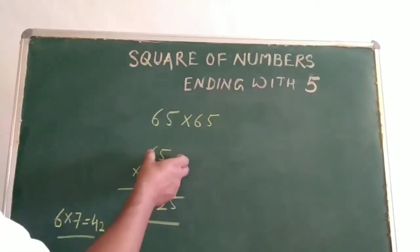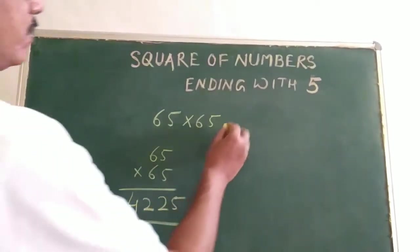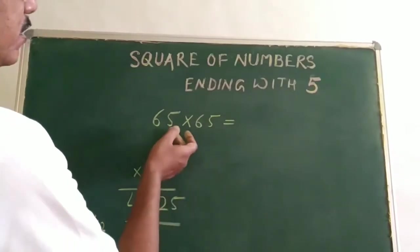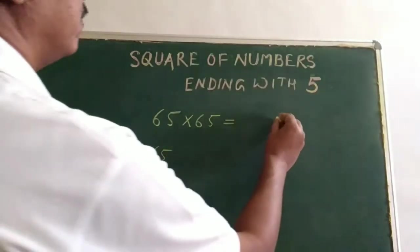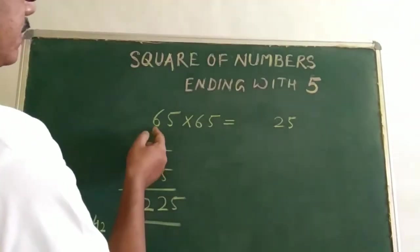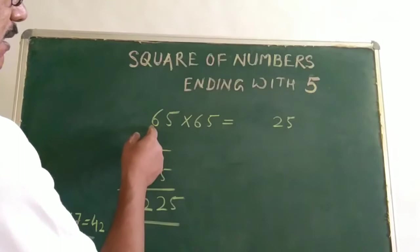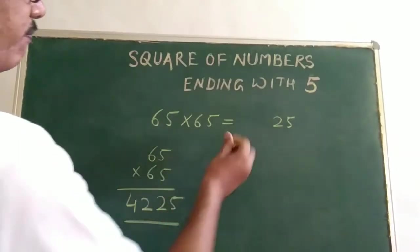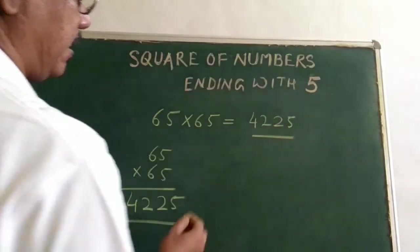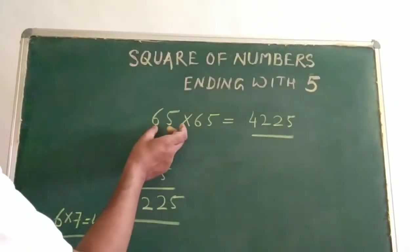To make you understand, I have explained it like this. But in one step also you can find out the square of 65. The first number is 5, so first write down the square of 5 that is 25. The next number is 6, and the next number after 6 is 7. So 6 times 7 is 42. We write 42 here, and directly in one step we get the answer: the square of 65 is 4,225.